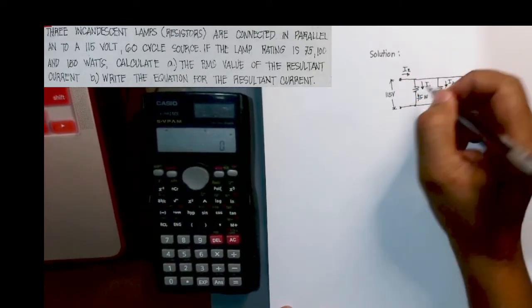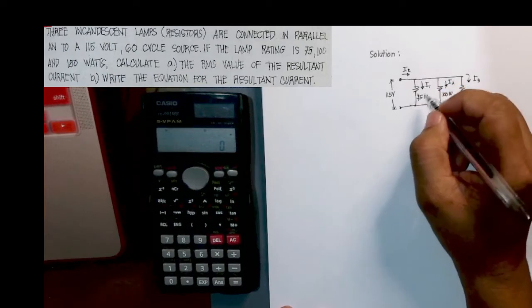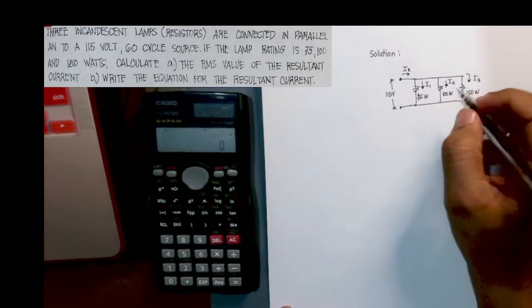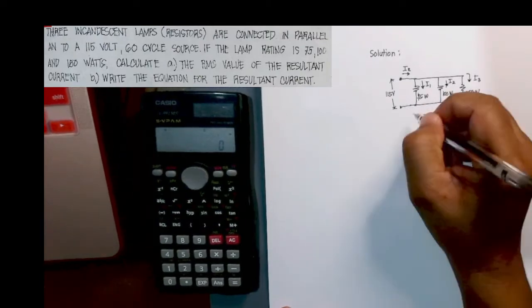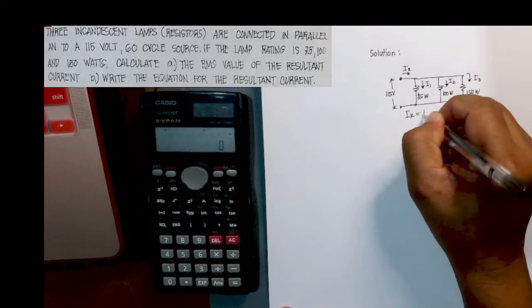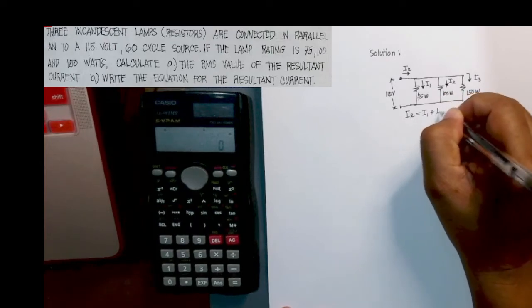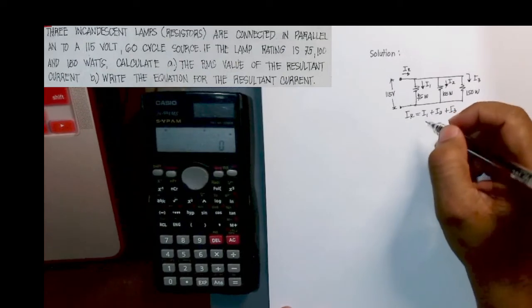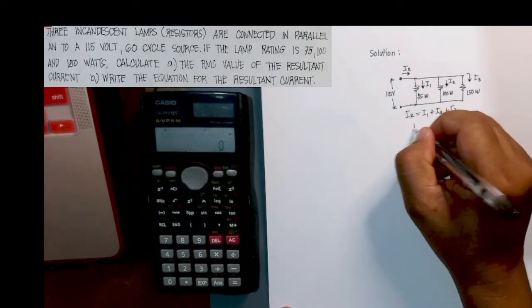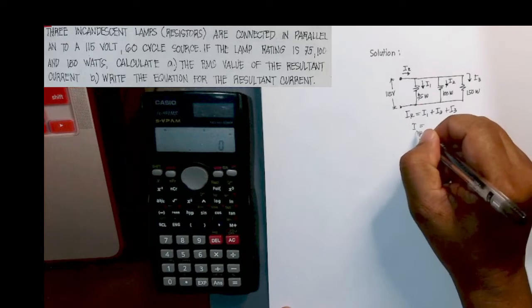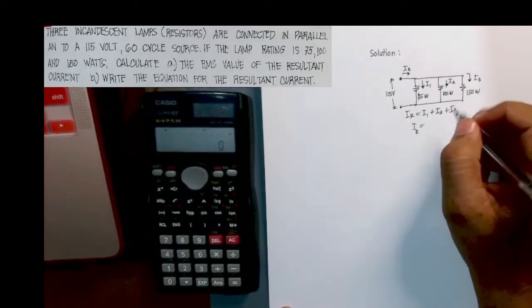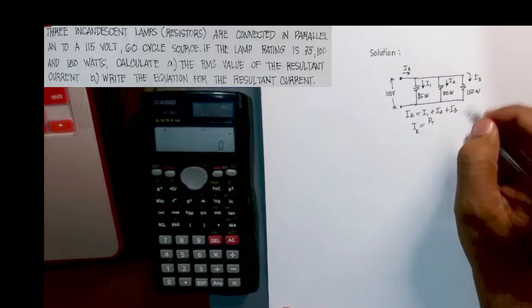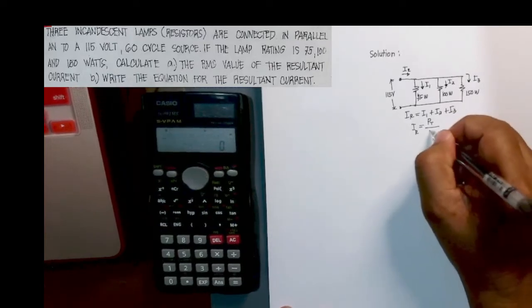So to be able for us to solve for the resultant current is the total power divided by the voltage.